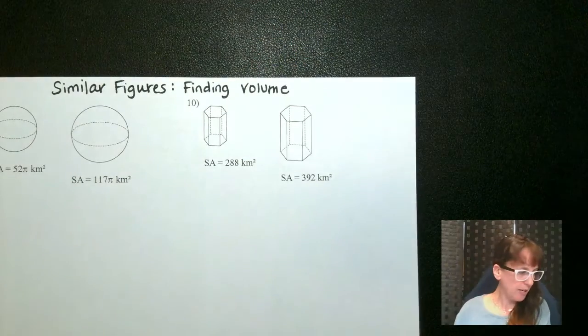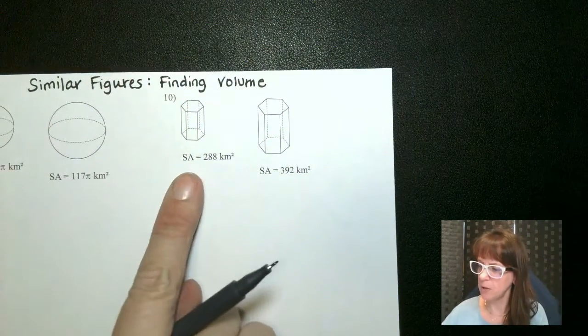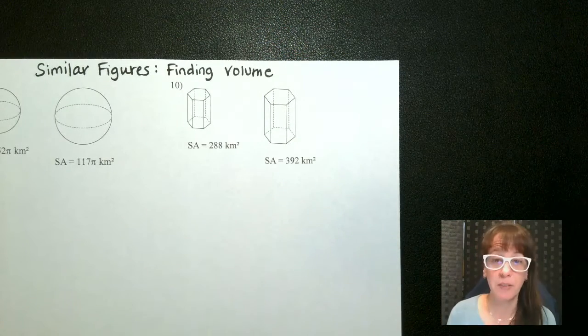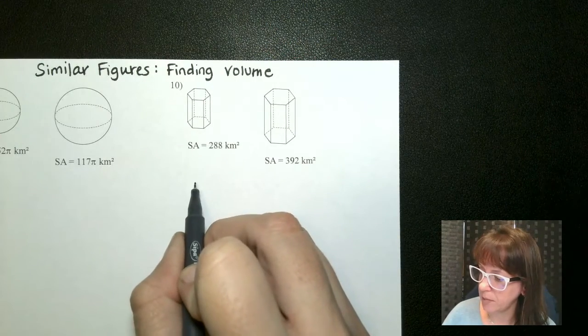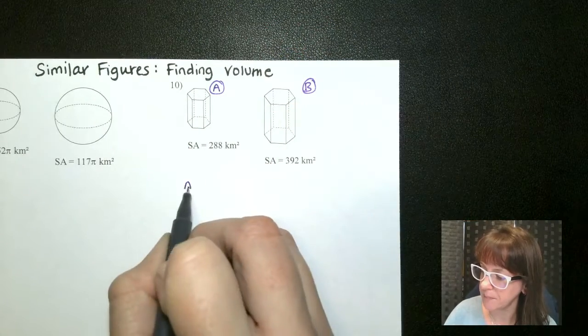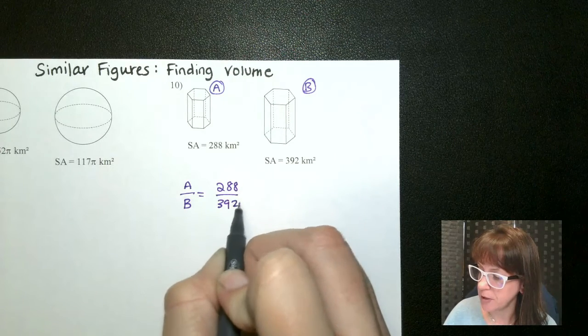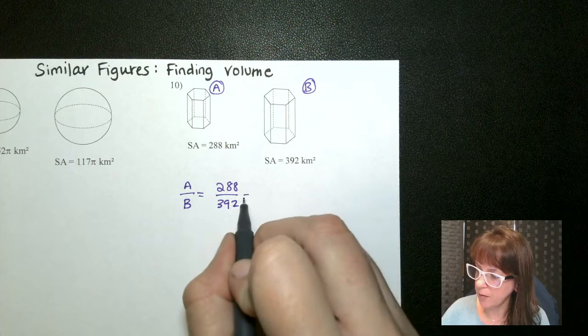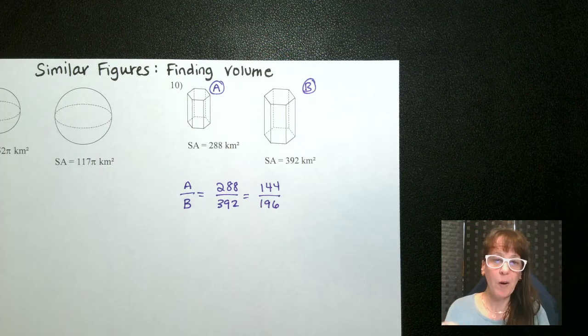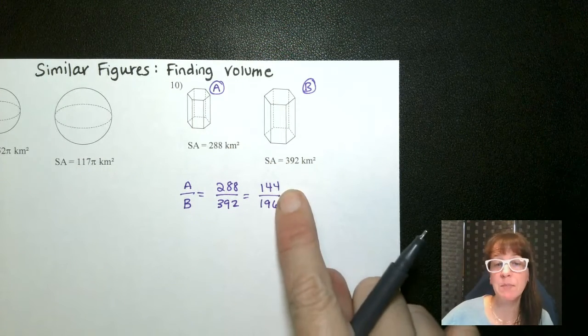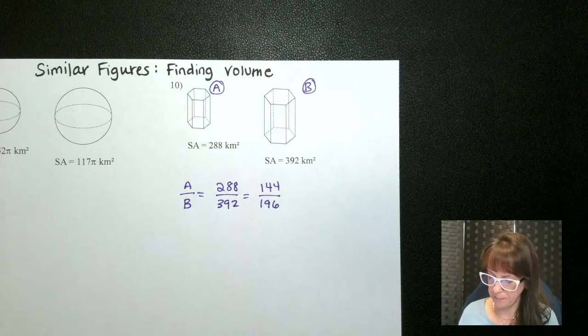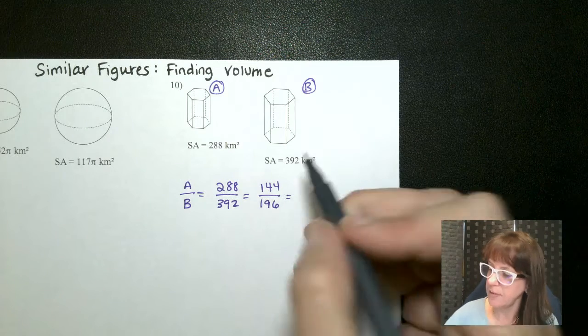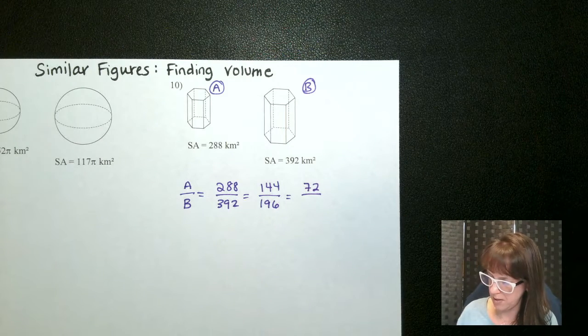All right so let's take a look at this guy right here. Okay so we have a surface area of 288 and a surface area of 392. I want you to find the ratio of the volumes here. So the first thing we have to do is find our scale factor. So given this we're going to call this guy A and this one B. So from A to B we're going to say 288 divided by 392. Now if I cut those guys in half I end up with 144 and 196. Straight away I already know that these are perfect squares but I think they can be reduced again because they both end in an even number. So let's reduce them as far as we possibly can. So if we cut these in half we end up with 72. Yes I don't know why I paused on that.